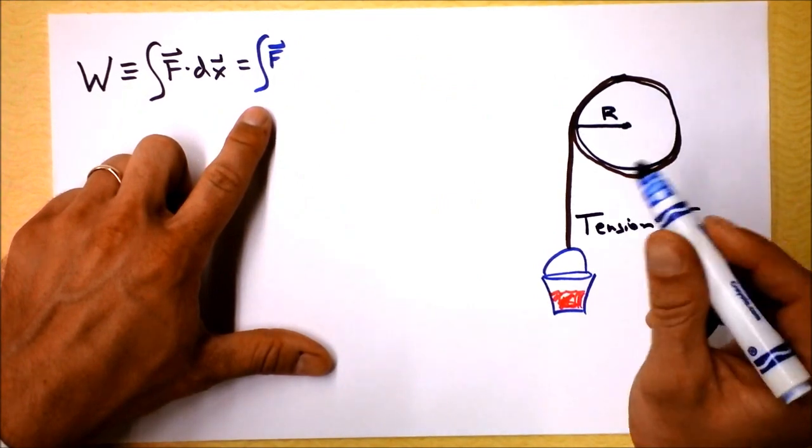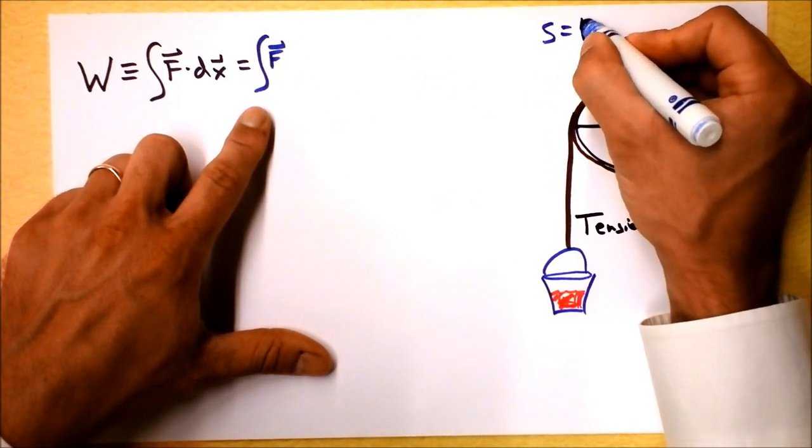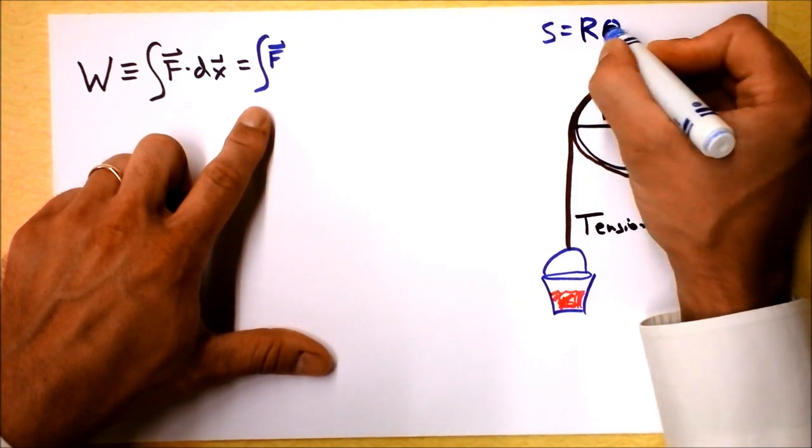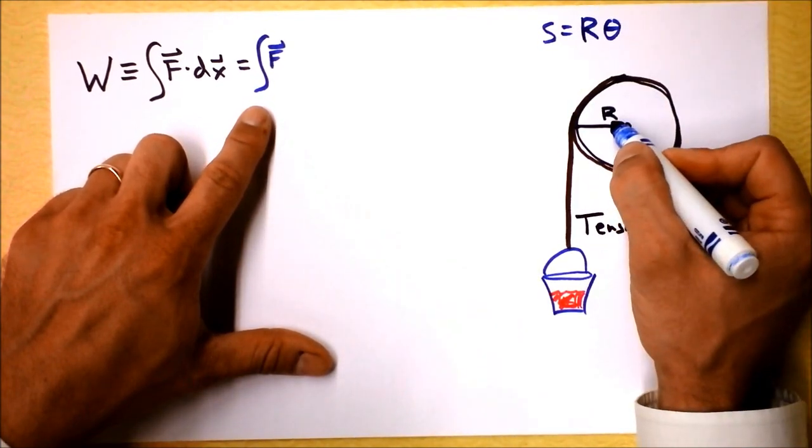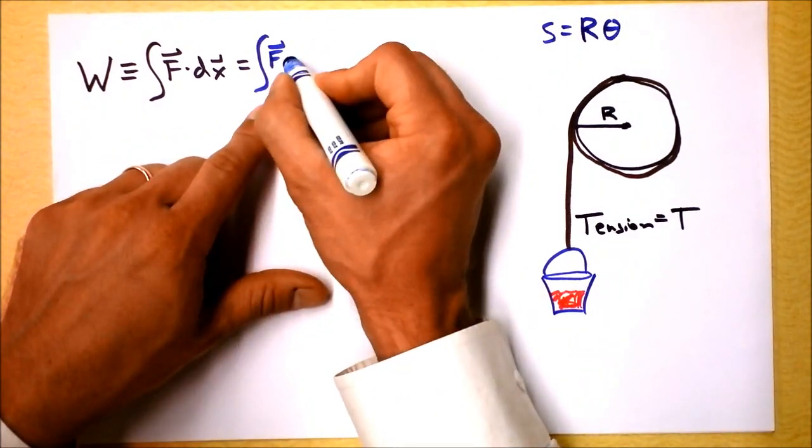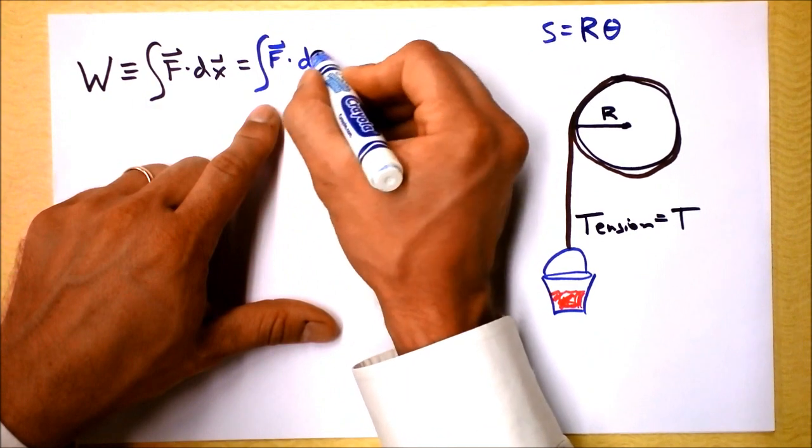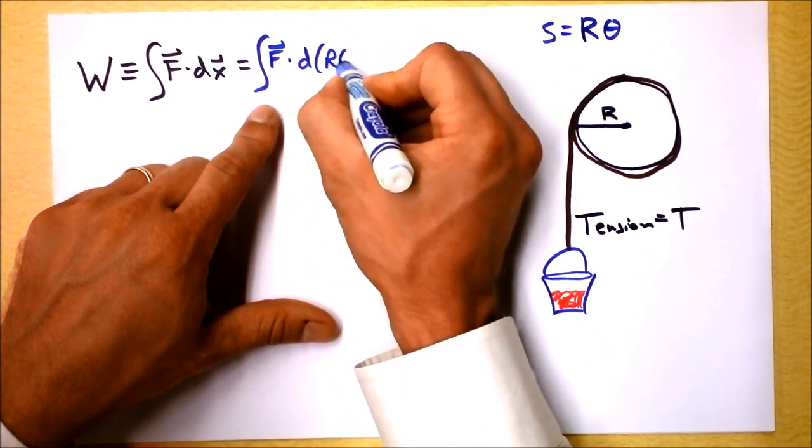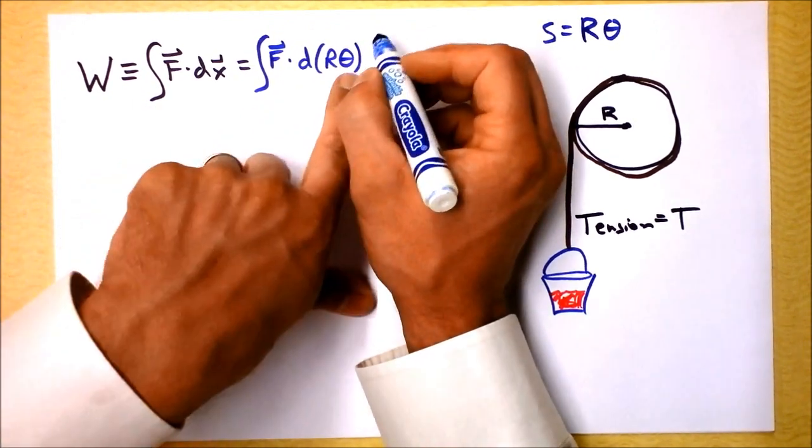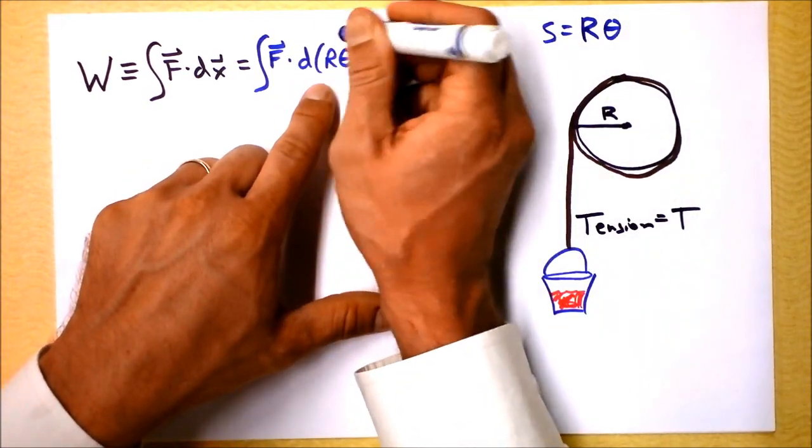In circles we're gonna change it just a tiny bit. It's still going to be an integral, still gonna have force in it, but when you cause a circle to turn, you're actually moving in s. And we know that s is, well in this case, R times theta. It's then F dot dR theta.